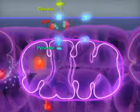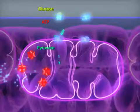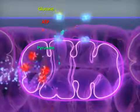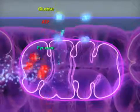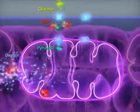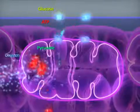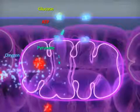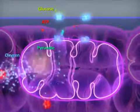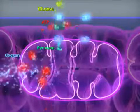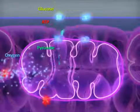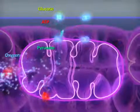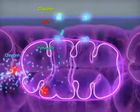Glucose metabolism is a rapid and effective way to obtain energy. Anaerobic oxidation of glucose primarily takes place in the cell cytosol, where glucose is broken down into pyruvates. During this process, two molecules of ATP are generated.